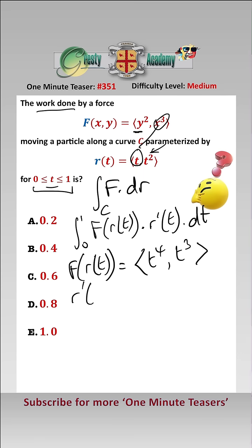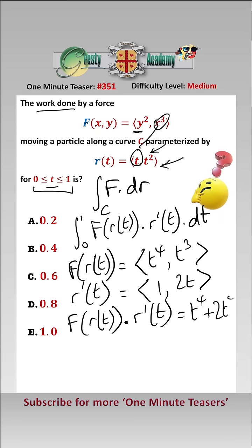r'(t), just looking at this, all we've got to do is differentiate it. That equals (1, 2t). So now we can do the dot product of F(r(t)) dotted with r'(t), which is t⁴ times 1 plus t³ times 2t, which is 2t⁴.